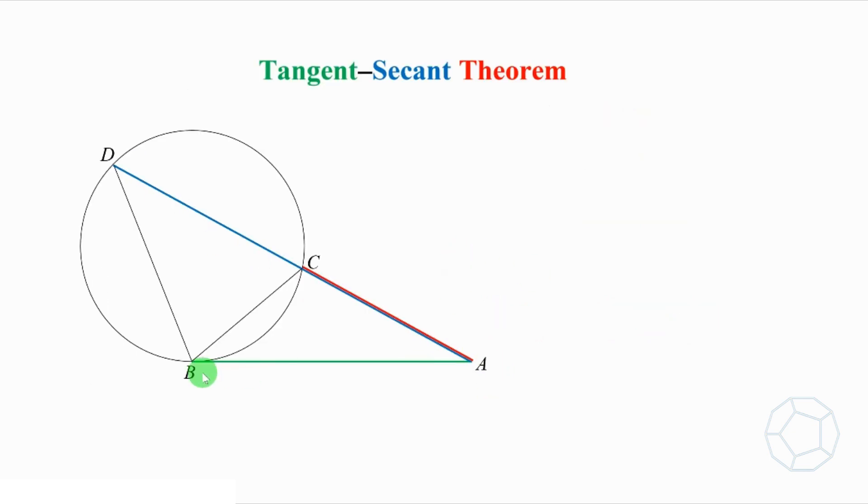In the figure, AB is the tangent of the circle. ACD is the straight line, cutting the circle at two points. We call it a secant of circle. Then AC times AD is equal to AB squared.